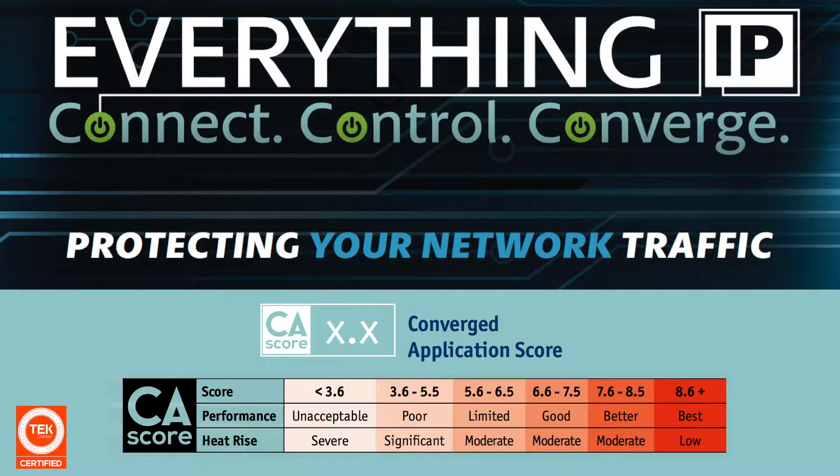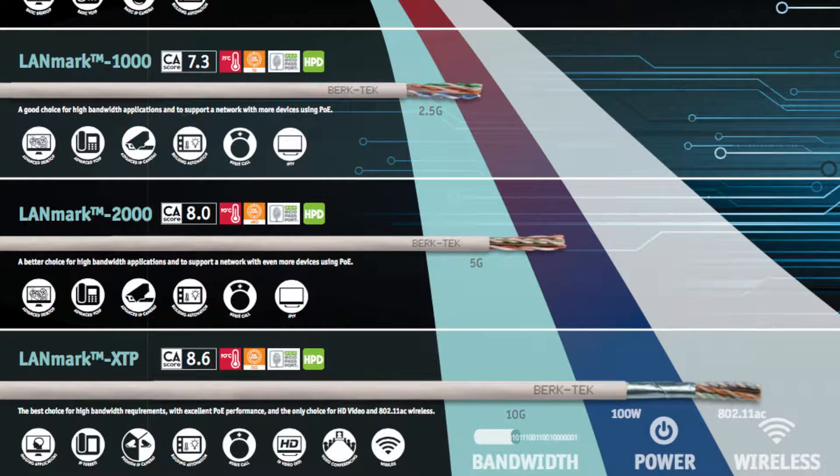As part of BerkTech's everything IP messaging, we developed what we call our converged application score. The converged application score looks at all the different types of applications that are going across the internet and applies a score to them to help guide our customers as to what cable will most suit their needs for their increasing bandwidth and power demands.